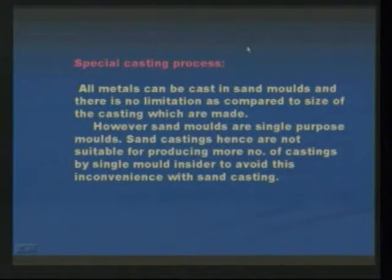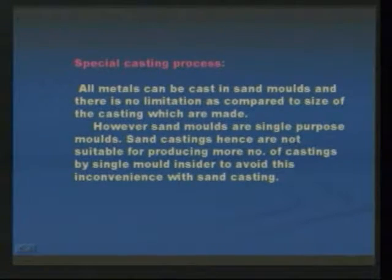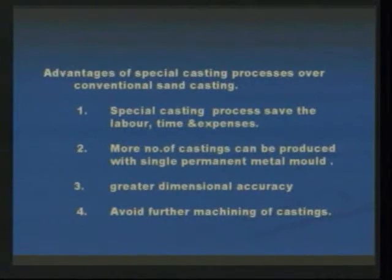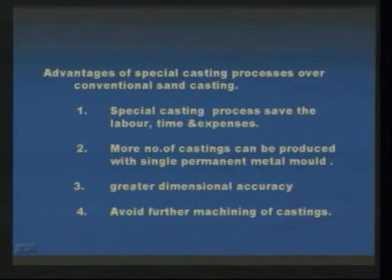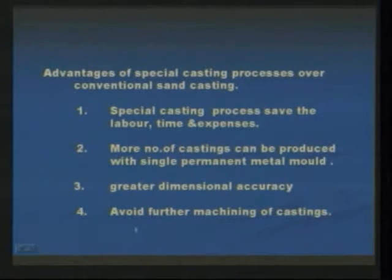The next one is special casting processes. All metals can be cast in sand molds and there is no limitation on size of castings. However, sand molds are single purpose molds. There are different advantages of using special casting processes over conventional sand casting: they save labor, time, and expenses. More castings can be produced with a single permanent metal mold. Greater dimensional accuracy is also possible and it will avoid further machining of the castings.